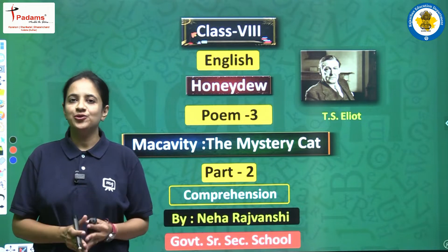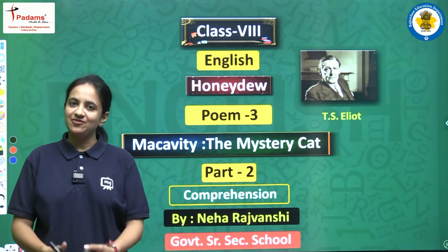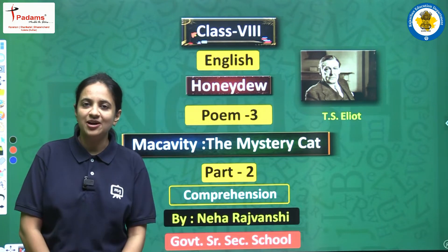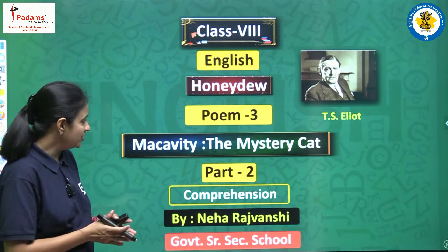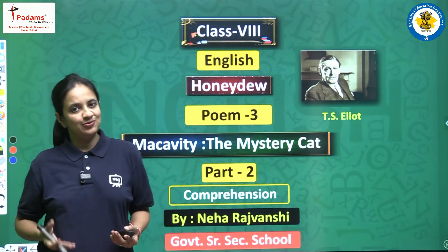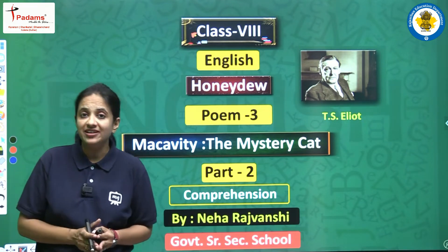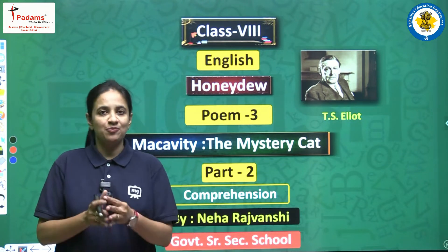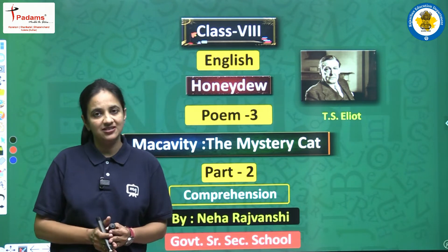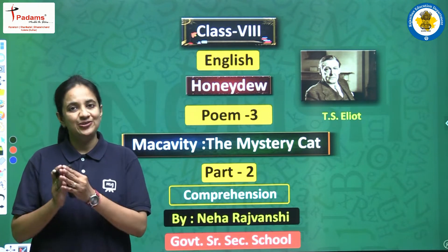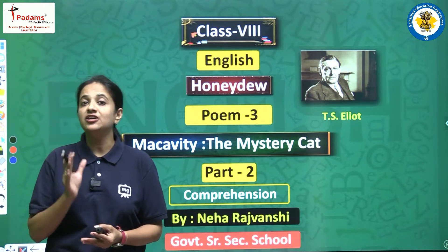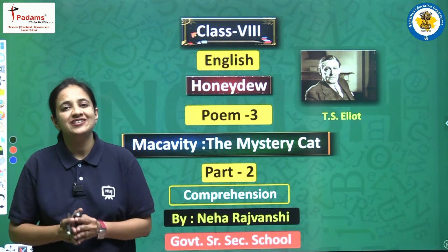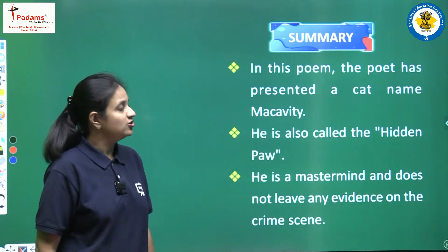Hello students, I am Neha Rajwanshi and I welcome you all to today's English class of Class 8. In the previous video we completed reading poem number 3 from the book Honeydew — the name of the poem is 'Macavity the Mystery Cat.' In today's video we will solve the comprehension questions, but first we will start with the summary of the poem so we can revise the central idea.